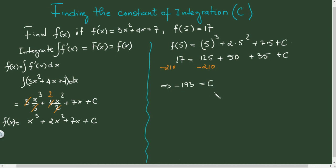Now we can write the complete function: f(x) = x³ + 2x² + 7x - 193. This is the function that gives us the original derivative.